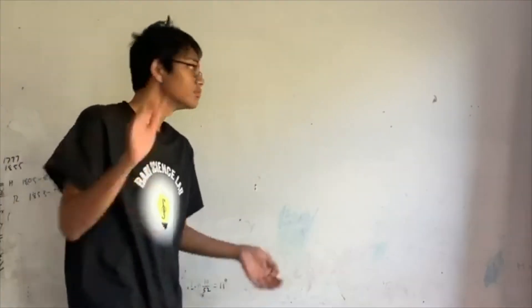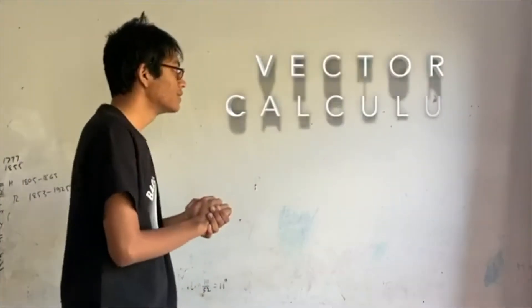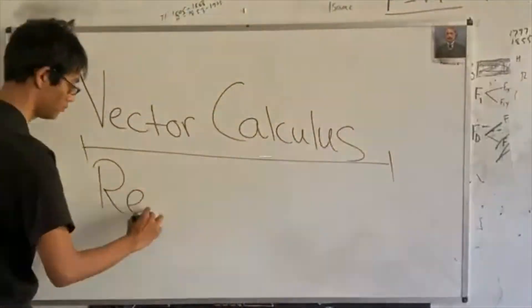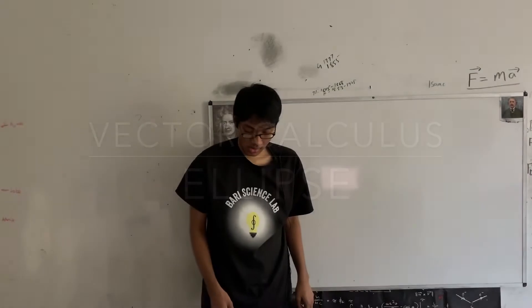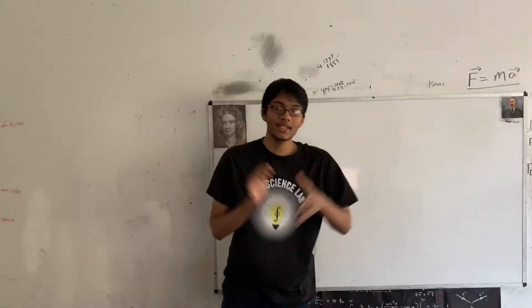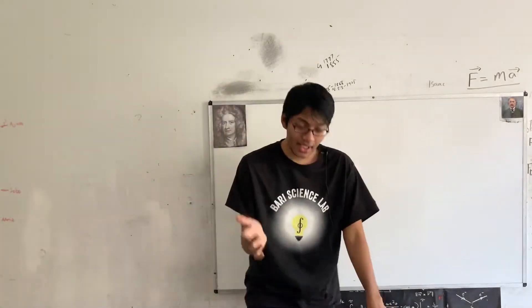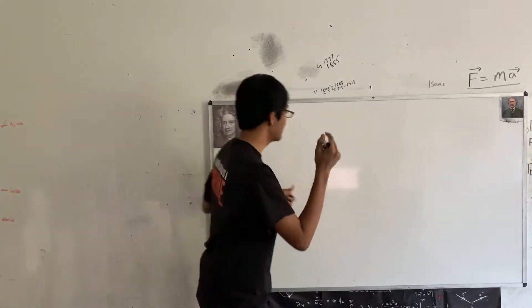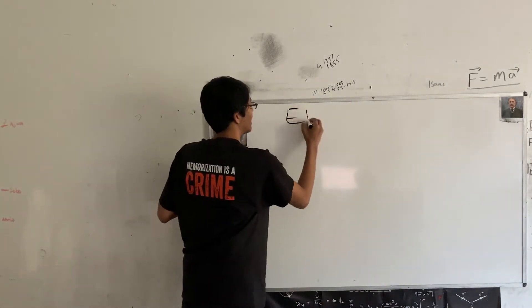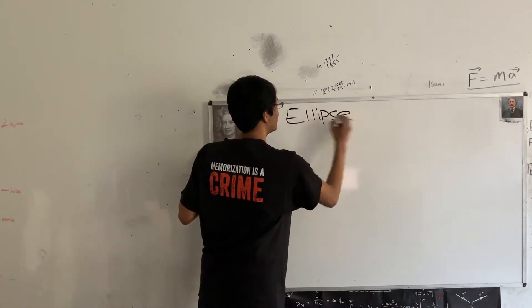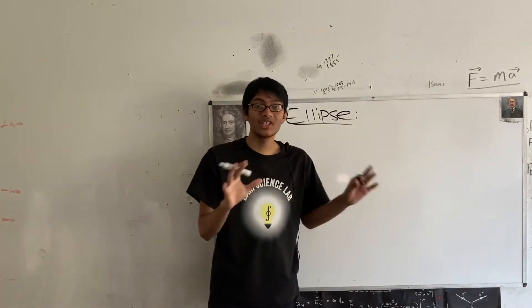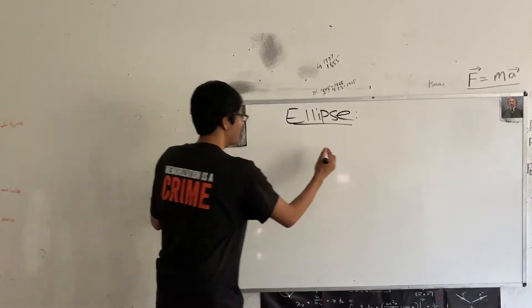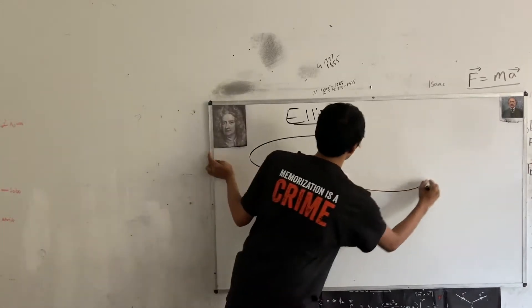Welcome to Vector Calculus. Welcome back to the next lecture of Vector Calculus. Today we're looking at the ellipse — E-L-L-I-P-S-E. Many of you might mistake it for its cousin, the circle. But the ellipse actually has many amazing properties which we're going to look at today.